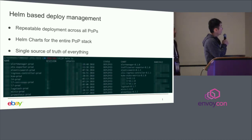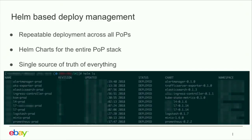We use Helm for deployment management to give us a consistent stack across all POPs, as well as in our dev and production clusters. Everything is packaged into a Helm chart — we have Helm charts for L4 and L7. With Helm, you can deploy multiple clusters of L7 inside the Kubernetes cluster and get a single source of truth for what's deployed, what version was deployed, and when it was deployed.